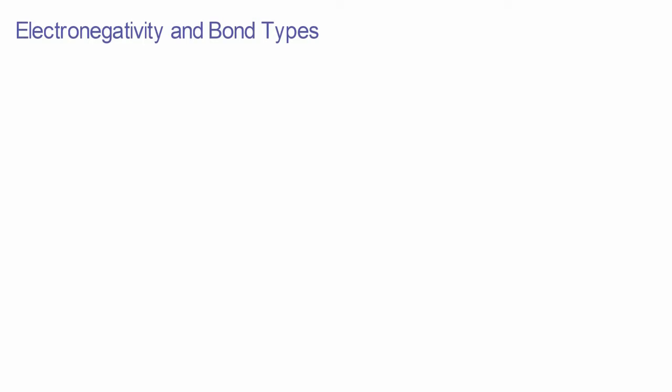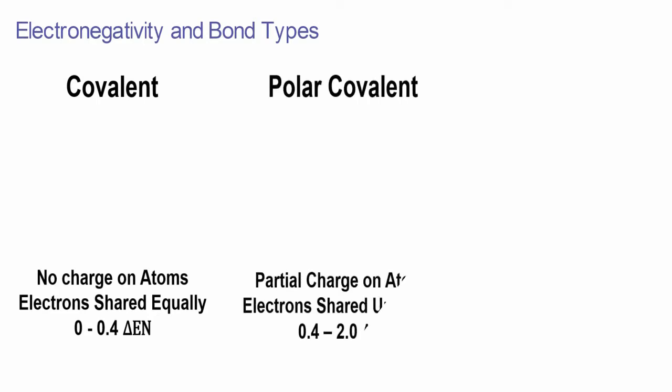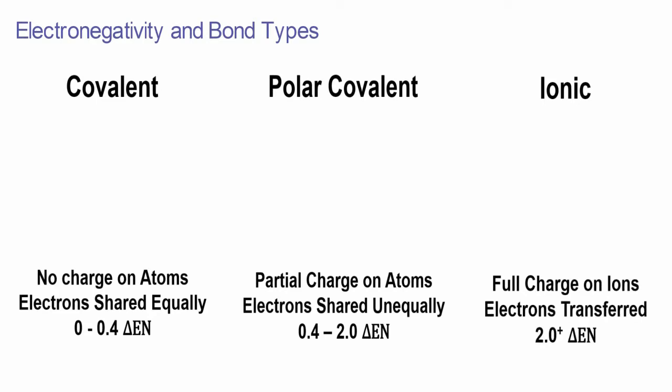The electronegativity difference between bonded atoms can be used to identify which type of bond exists in a molecule. A purely covalent bond, where electrons are shared equally, will have no charge on the bonded atoms and an electronegativity difference of 0 to 0.4 delta En. A polar covalent bond, where electrons are shared unequally, will have a partial charge on the bonded atoms and an electronegativity difference of 0.4 to 2.0 delta En. An ionic bond, where electrons are transferred, will have a full charge on the bonded ions and an electronegativity difference of greater than 2.0 delta En.